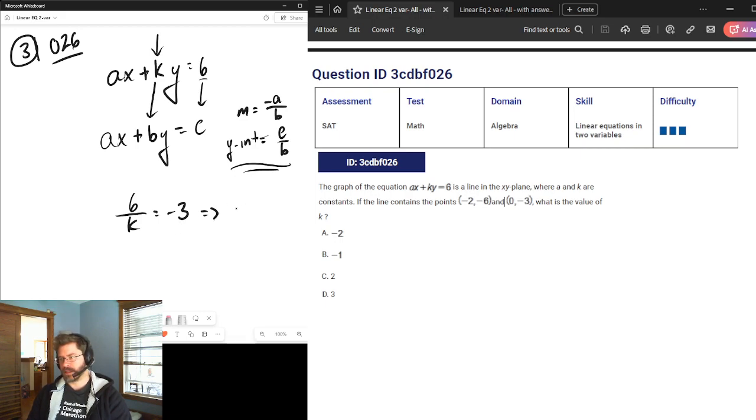So, doing the manipulation there. Multiply the k, divide the negative 3, get the negative 2, equals k. So that's answer a.